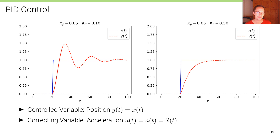This illustrates the importance of adding a differential element to the proportional controller, especially for such a double-integrator system — which is not unreasonable, because if you want to do ACC (adaptive cruise control) or just cruise control, you have to implement such a system.